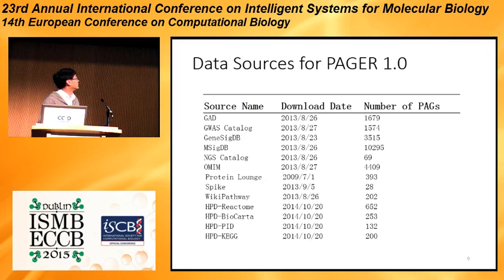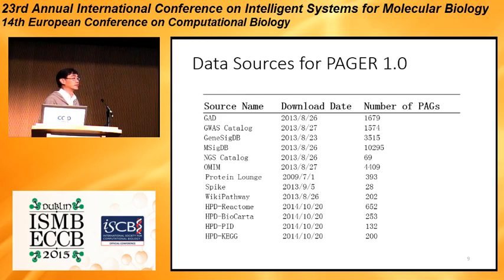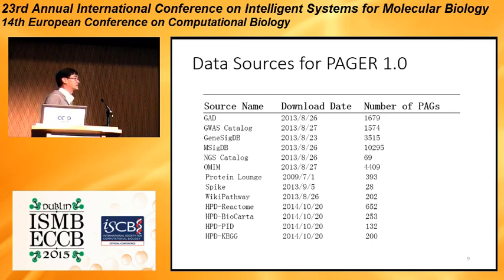The actual data sources for Pager 1.0 came from a large variety of sources downloaded at different times. One question you may ask is: is this comprehensive? I would say it is far, far less comprehensive than it could be. If you think about it, there are 20,000 human genes, and making those genes into any kind of configuration of sets — that combinatorial space is extremely large. Obviously not all of them make sense, but I think this represents only the starting point for a community effort.